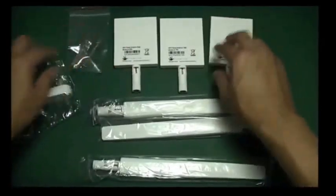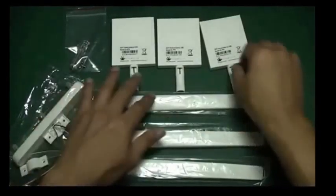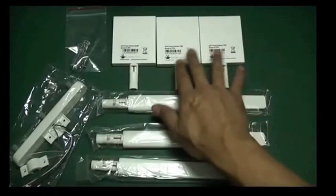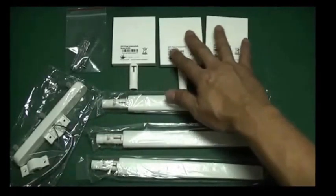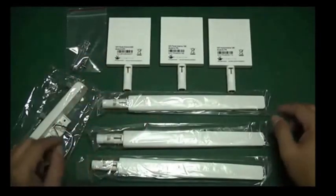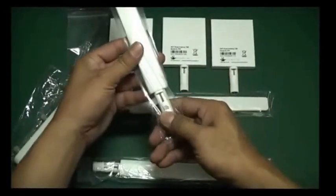So this is the package contents. This is a 7 dBi for 2.4 GHz, this is 6 dBi for 5.8 GHz, and here we have a mount for 5.8.